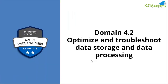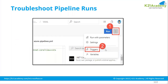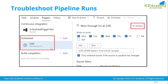Moving on to Domain 4.2: Optimize and Troubleshoot Data Storage and Data Processing. Keep watch on your different triggers when you run your pipeline. Be aware of the on-demand trigger, schedule trigger, tumbling window trigger, and event trigger. Here is an example of a schedule trigger.